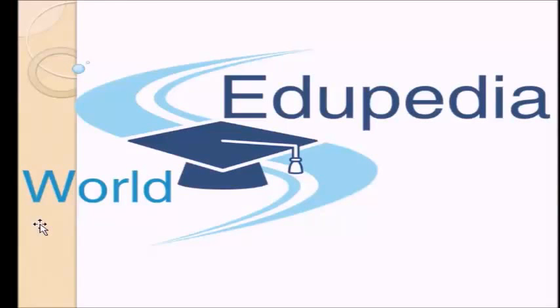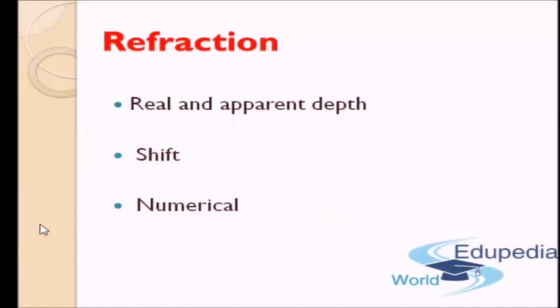Hi friends, welcome back to Eddupedia World. Last lecture we focused on the prism and behavior of refraction on a prism. Today we will see some applications of refraction in real life. We will see what real and apparent depth is and how apparent depth is influenced by refraction. As a result of a variation in real depth from apparent depth, there is something known as shift. We will discuss that, and finally close the chapter with a numerical to understand real and apparent depth better.